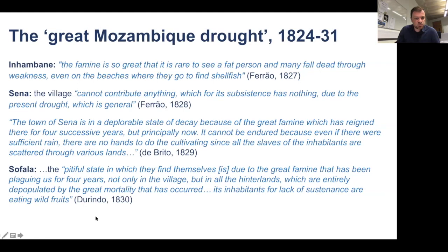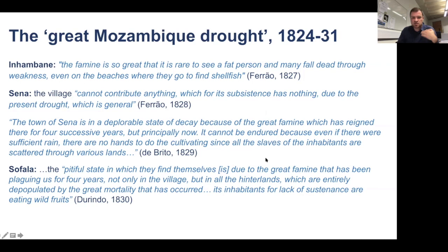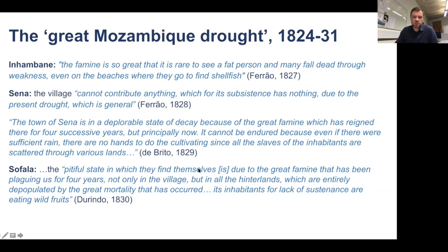I'll just skip over this slide quickly, but this is an example of the kinds of impacts that took place on the Portuguese settlements and the Zambezi Valley in the 1820s — many reports of famine, such that I had to sift out some of the best ones here. Basically, the lack of rain led in part to migration, and the selling of agricultural labour into the slave trade meant that even if there was sufficient rain, as spoken about in one quote, there were no hands to do the cultivating since all the slaves were scattered throughout various lands — a very much attribution of the state of the colonial settlements to the famine.